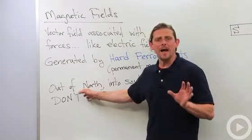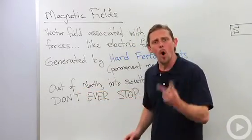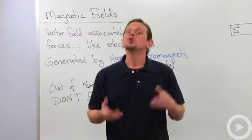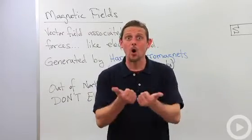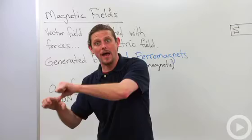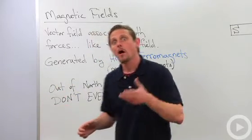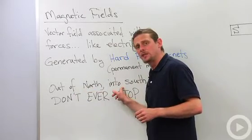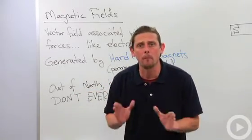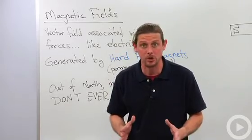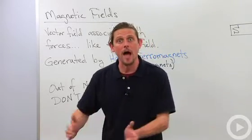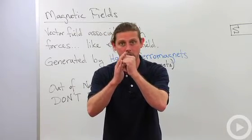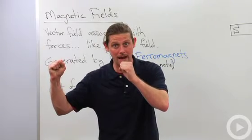Magnetic materials have two poles, which are kind of like electric charges, but not the same. Just like electric field lines go out of positive charges and end at negative charges, magnetic field lines come out of north poles and go into south poles. However, this is a very important distinction — probably the most important distinction between magnetic fields and electric fields. Electric fields are created at positive charge and destroyed at negative charge.